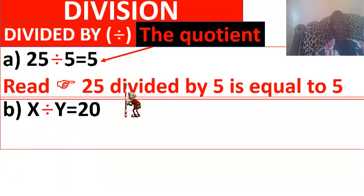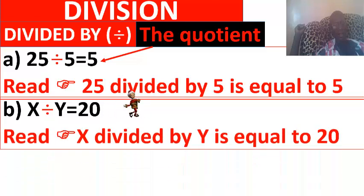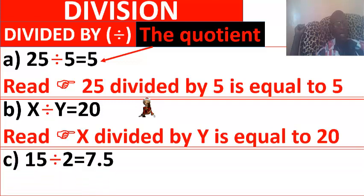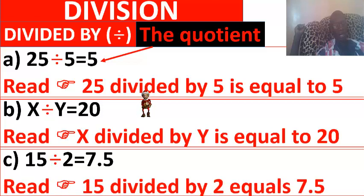B: X divided by Y is equal to 20. C: 15 divided by 2 is equal to 7.5. In English, 15 divided by 2 is equal to 7.5. This is division.